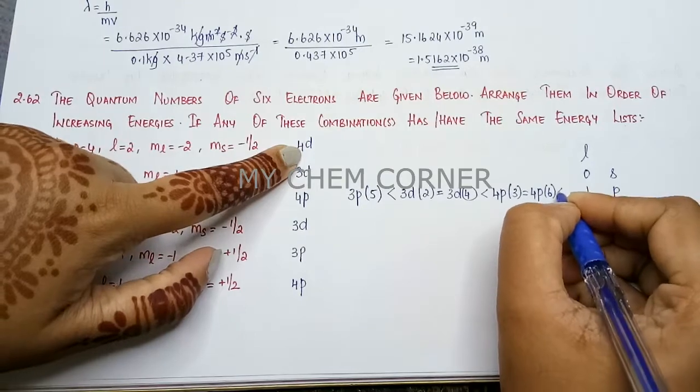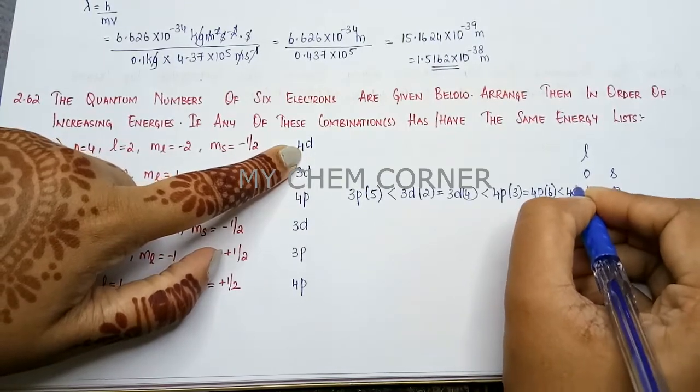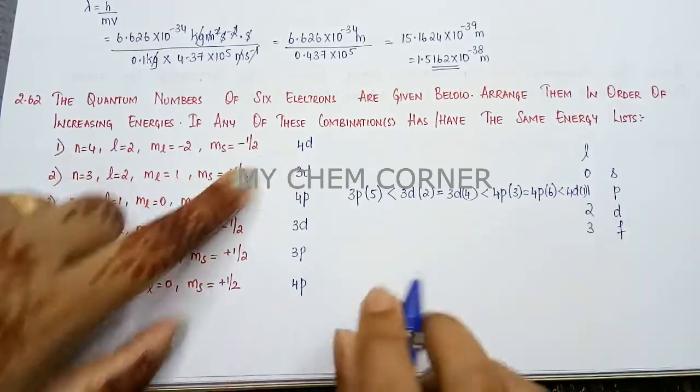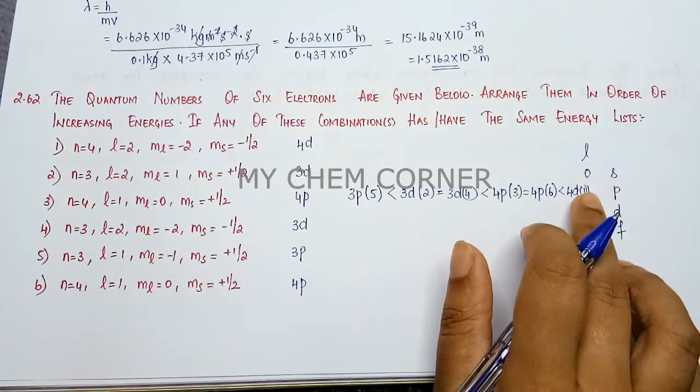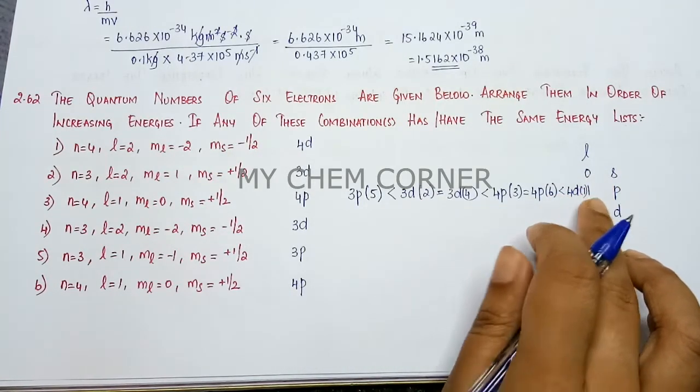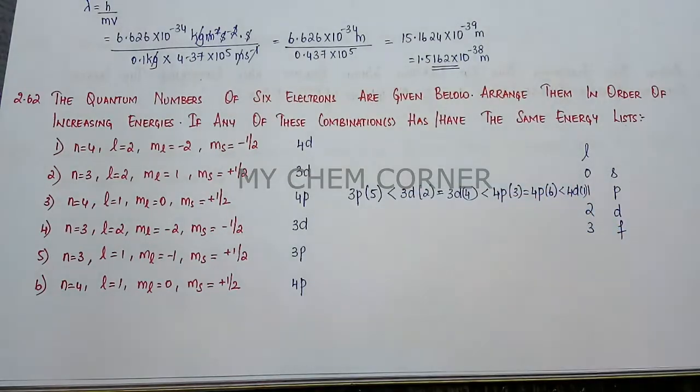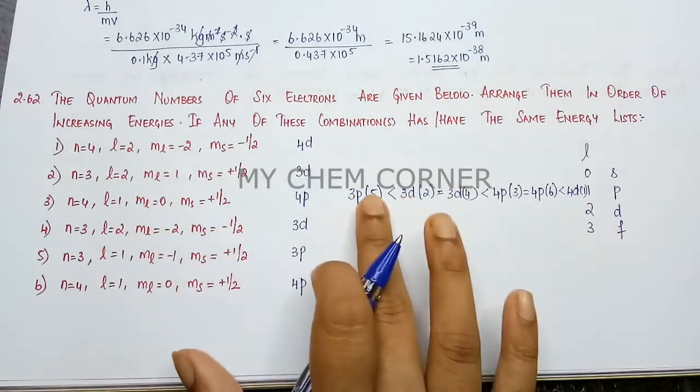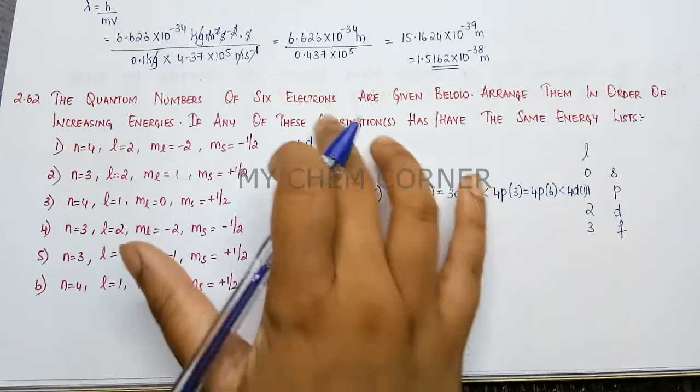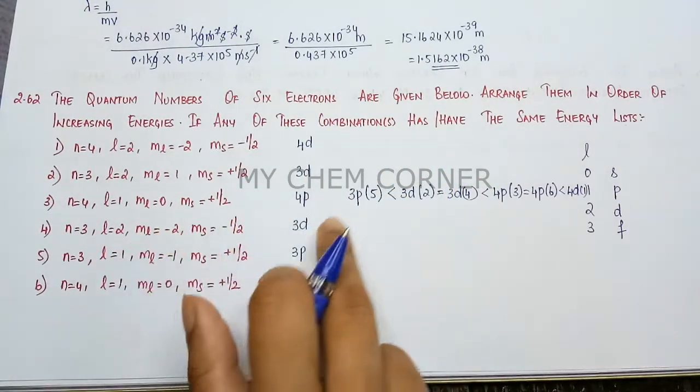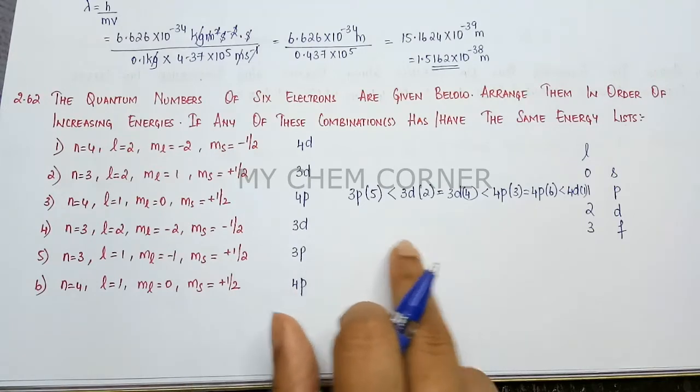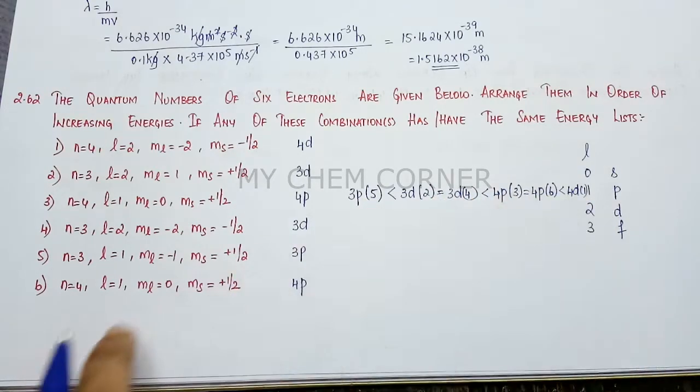So this is going to be the increasing order for your orbitals. First, what you will do is write down the orbital, then based on Aufbau principle, you are going to arrange these in order.